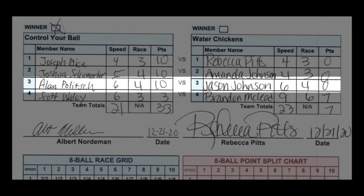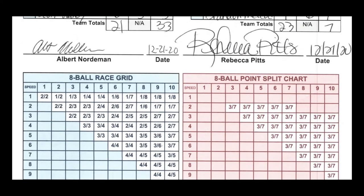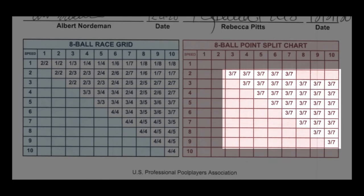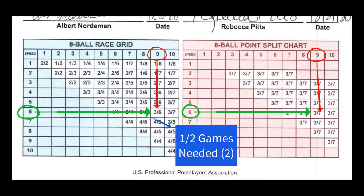Amanda would have needed to win at least half of her games needed to win the overall match. Moving on to match three, you can see that because both players had the same speed, there was no point split even available. But take a look at match four. Scott, having a speed of six, has an opportunity to steal points even if Scott loses the match, because Brandon has a speed of nine. Remember, only the player with the lowest speed ever has an opportunity to steal points. All point splits are a 3-7 split, meaning the player who won the match with a higher speed would get seven, but the player with the lower speed who stole points would get three.